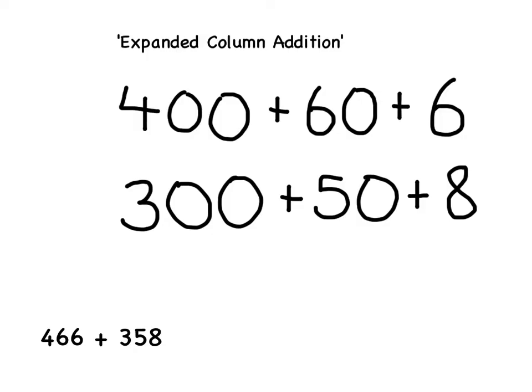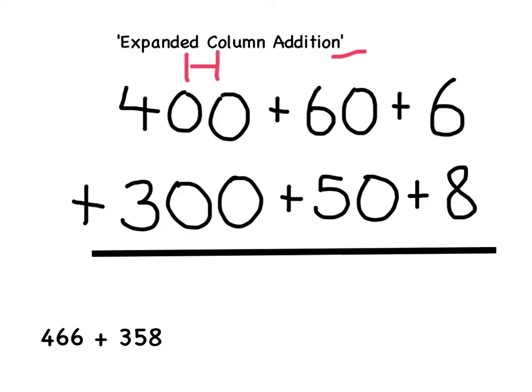Because we are doing an addition, we must remember to put in the add sign, and using a ruler, put a line underneath the partitioned numbers. Now we can add up the numbers in each of the columns that we've got: our hundreds, tens and units.